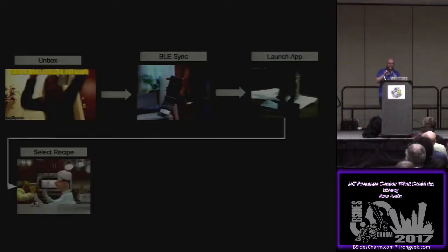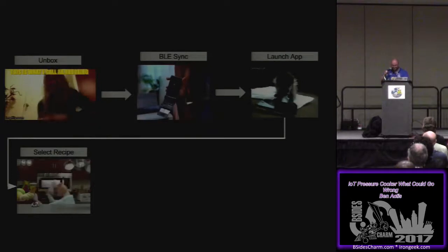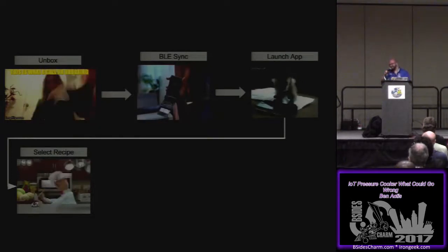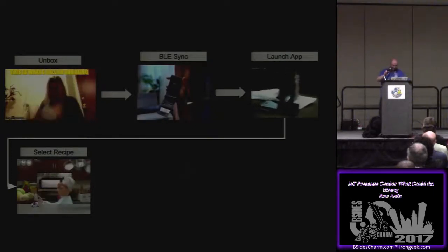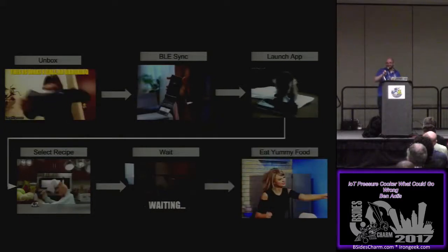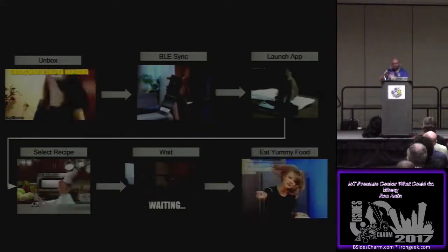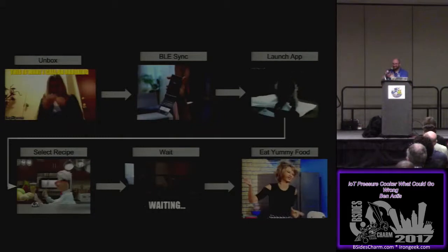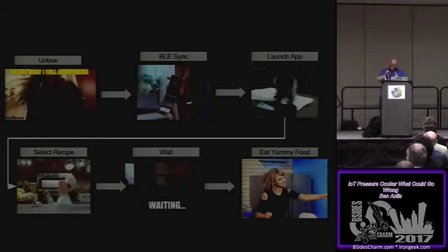Regular use cases — it's pretty simple. The idea is you unbox this big pressure cooker, you sync over Bluetooth Low Energy, then you launch your little mobile app, you select a recipe, you wait, and then you eat some yummy food. The product's cool — they just built it really bad.